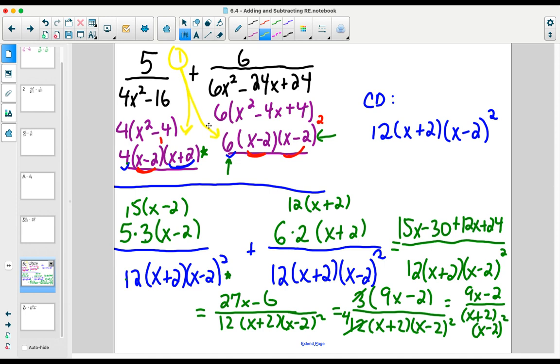So we factored the two denominators. We looked then for our common denominator, and then we used that common denominator to create numerators that could be added together. We looked for the missing factors from each denominator.